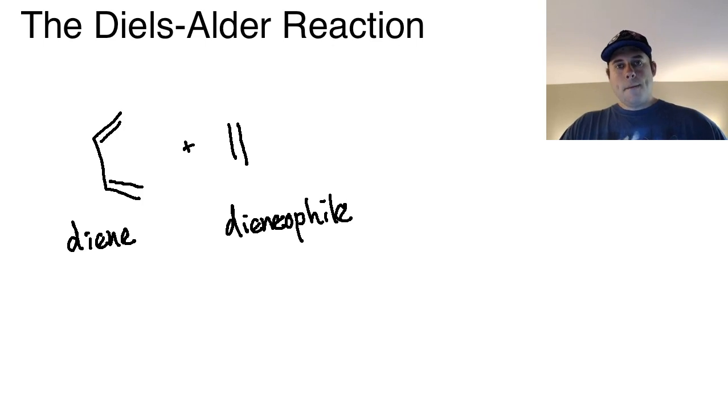This mechanism is what's known as a concerted mechanism. It happens all in one step, similar to a substitution reaction in SN2. In order for this to occur, what happens is the pi electrons from the diene reach out to the dienophile. The dienophile will take electrons and send it back to the diene, and then this final set of pi electrons will come down here.